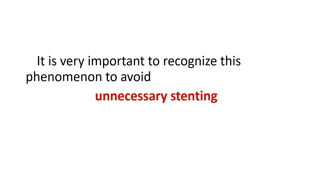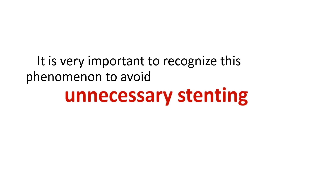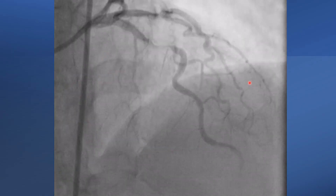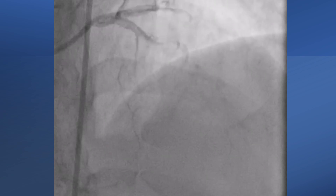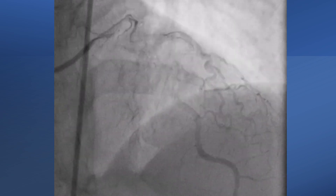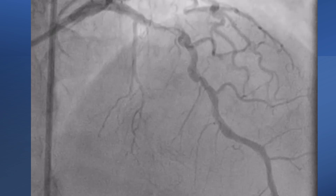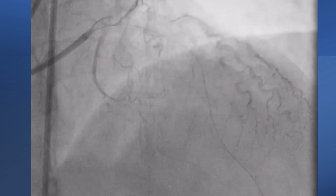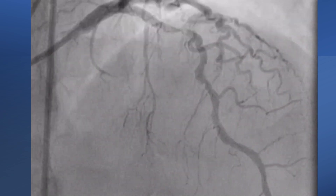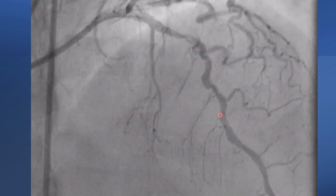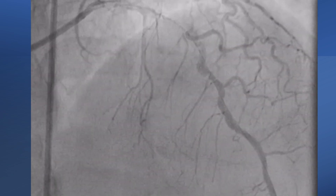It is very important to recognize this phenomenon to avoid unnecessary stenting. Look at this LCx — it's also tortuous with a critical part. After passage of a wire and balloon dilatation, multiple critical lesions appeared. This is typical of pseudo-lesions, seen as invagination of the wall into the lumen.